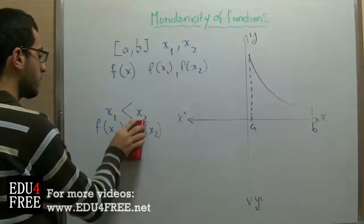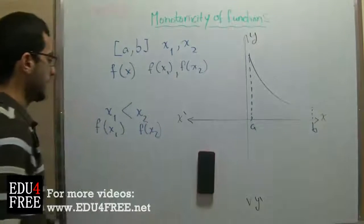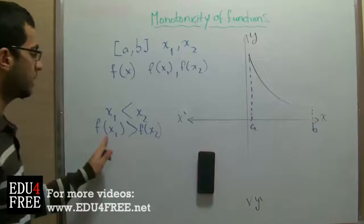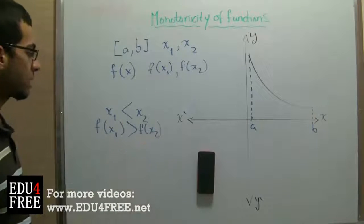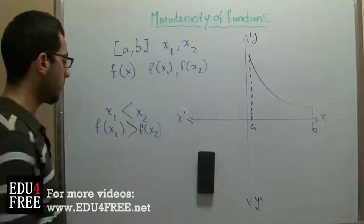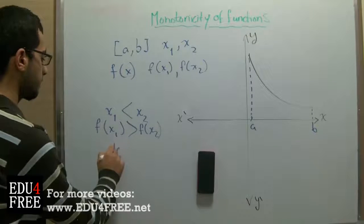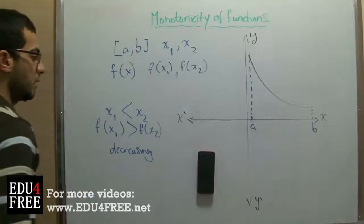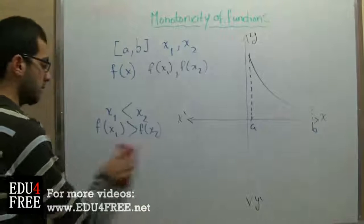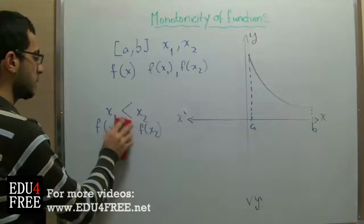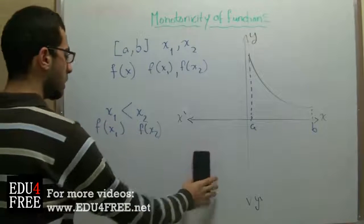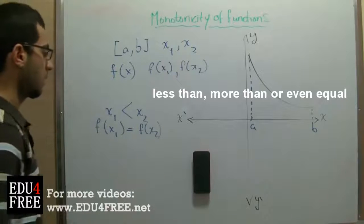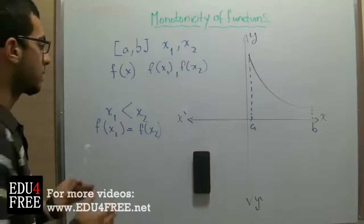Second, the function will be decreasing if x1 is less than x2 and at the same time f(x1) is greater than f(x2) — the result is higher. At that time the function will be decreasing. The last situation is that x1 is less than x2 and f(x1) equals f(x2). At that time the function will be constant.